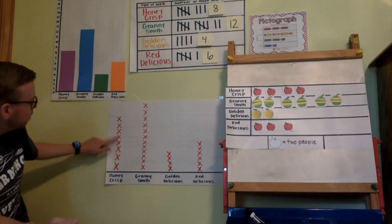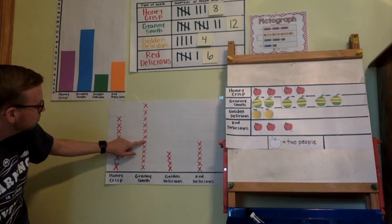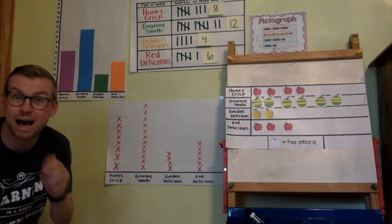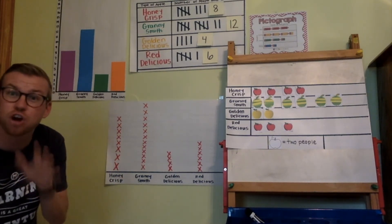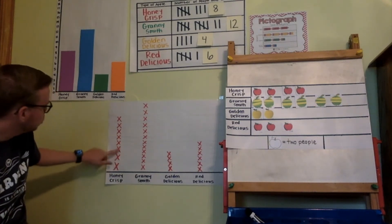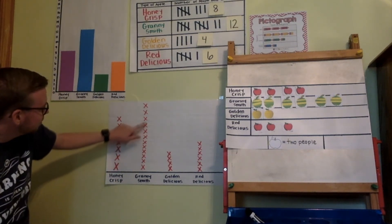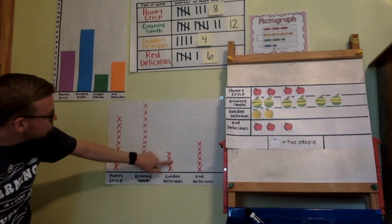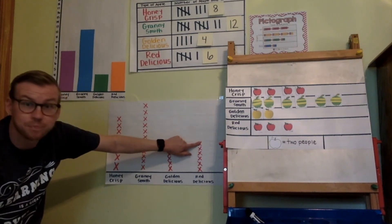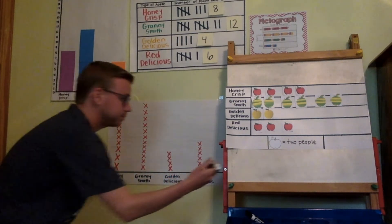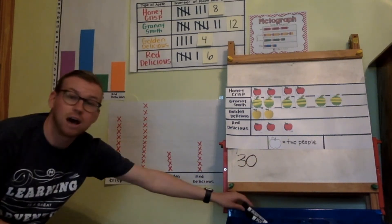Let's count the X's on the line plot together. Starting over: one through thirty. So there are thirty people surveyed in this survey of apples.